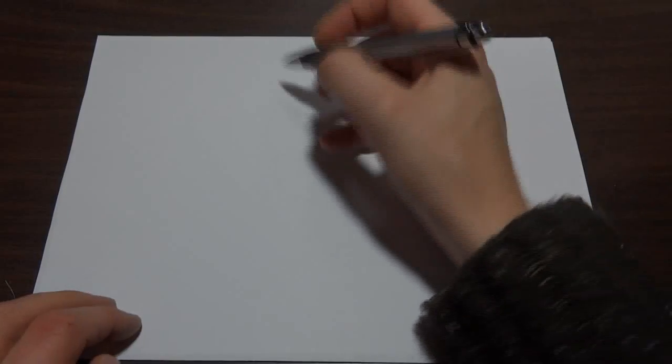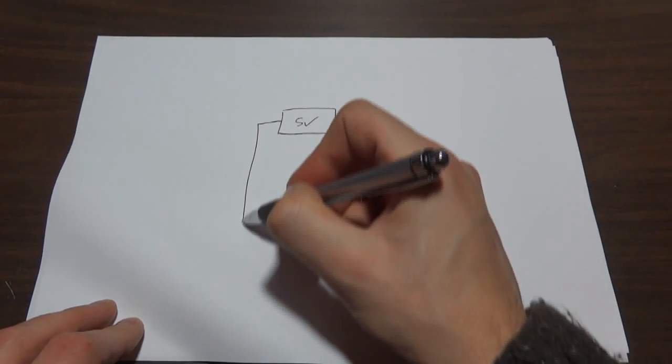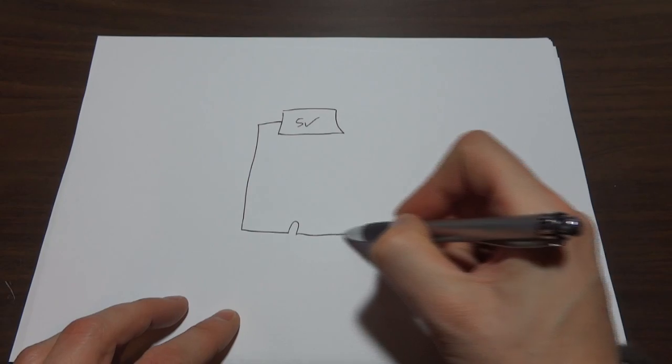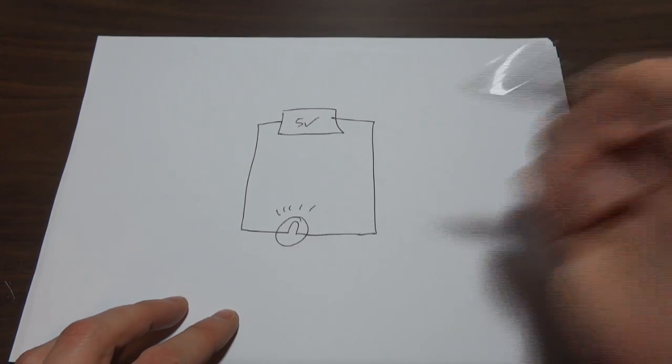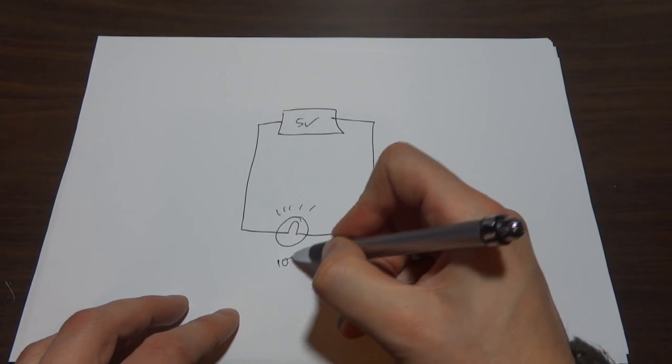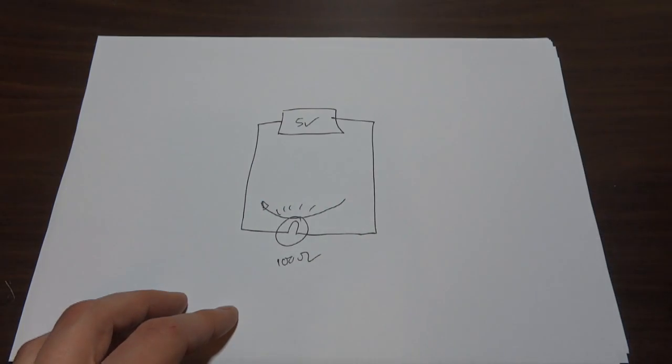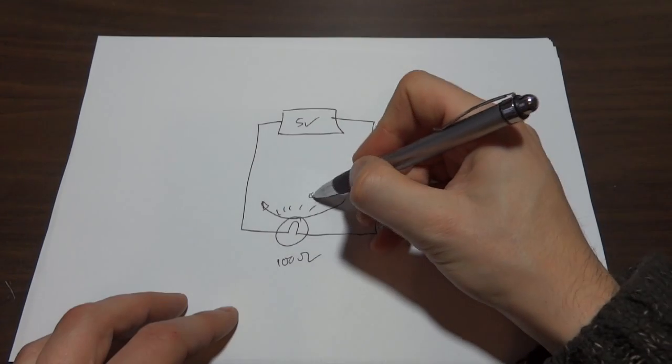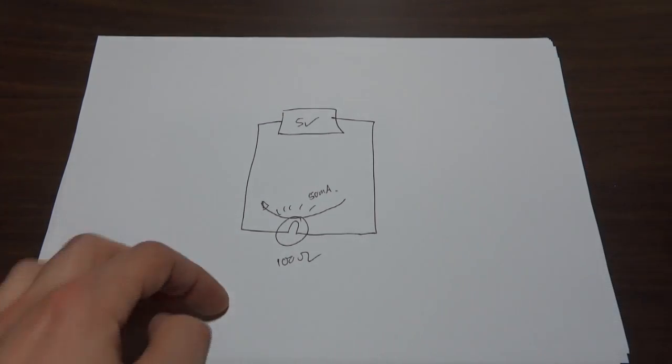So let's imagine a circuit which has a five-volt battery, and it has a bulb down here. Maybe that bulb is 100 ohms in resistance, which means the current flowing through the bulb is going to be 50 milliamps. So that's all very well and good, a bit like a flashlight or a torch.